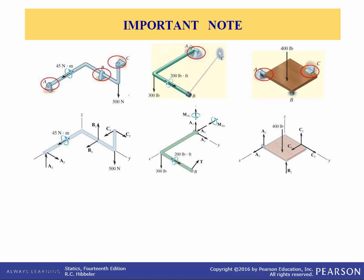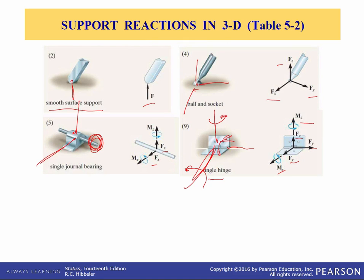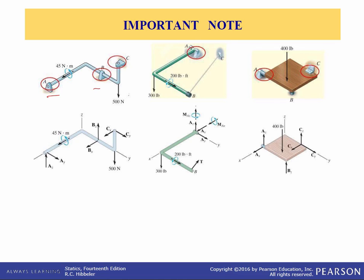This is very important because it makes solving problems possible. Single bearing supports — the single pin and the single hinge — are shown to resist both force and couple moment components. However, if these supports are used in conjunction with other bearings, pins, and hinges to hold a rigid body in equilibrium, and the supports are properly aligned, then the force reactions at these supports alone are adequate. The couple moments become redundant and are not shown in the free body diagram.